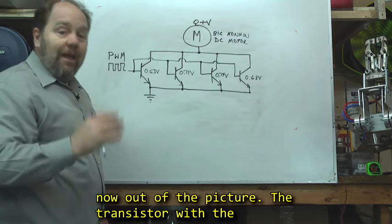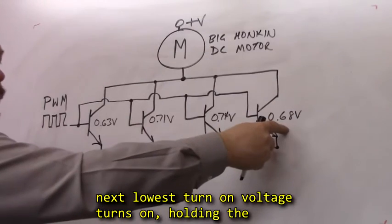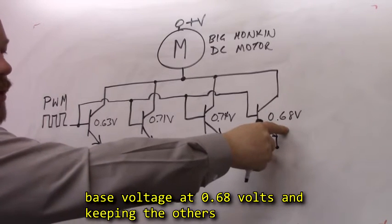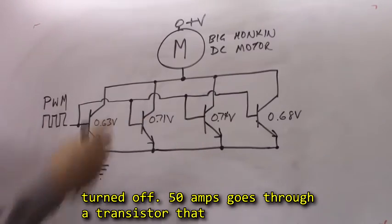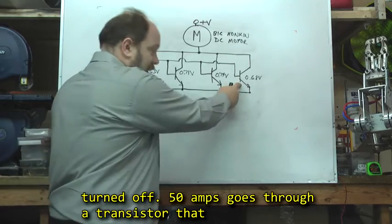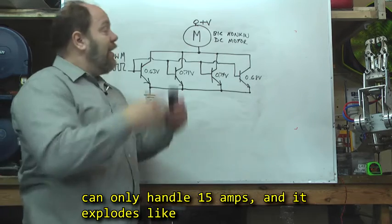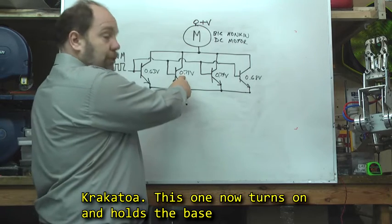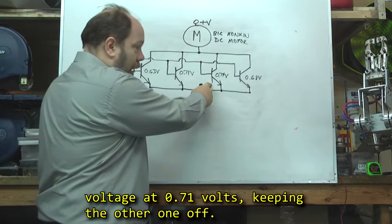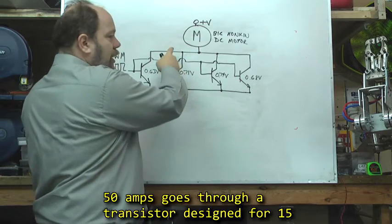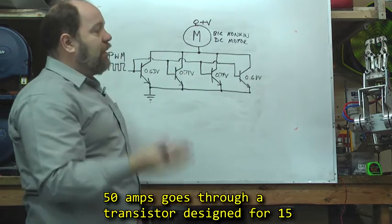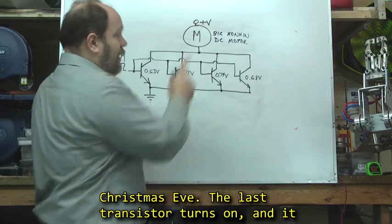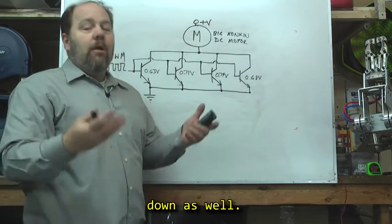The transistor with the next lowest voltage turns on, holding the base voltage at 0.68V and keeping the others turned off. 50 amps goes through a transistor that can only handle 15 amps, and it explodes like Krakatoa. This one now turns on, keeping the other one off. 50 amps goes through a transistor designed for 15 amps, and it explodes like Nakatomi Plaza on Christmas Eve. The last transistor turns on, and it definitely can't take it either, and it has a meltdown as well.